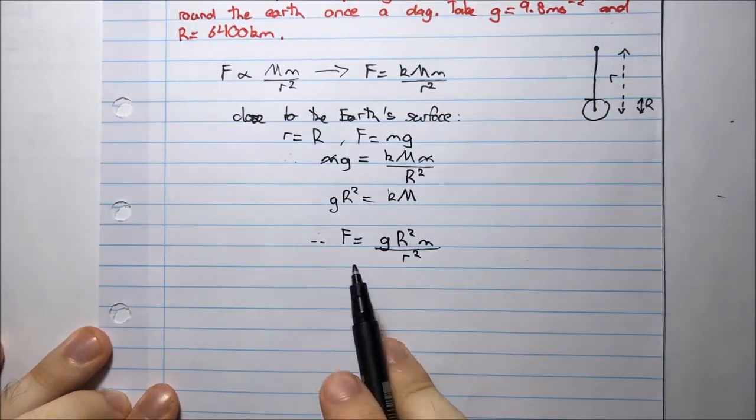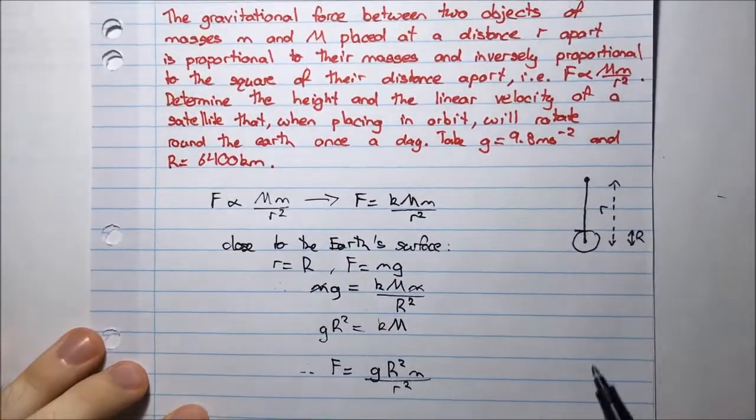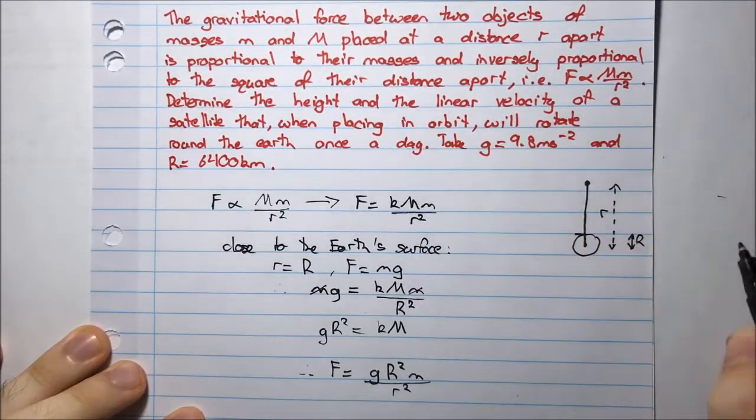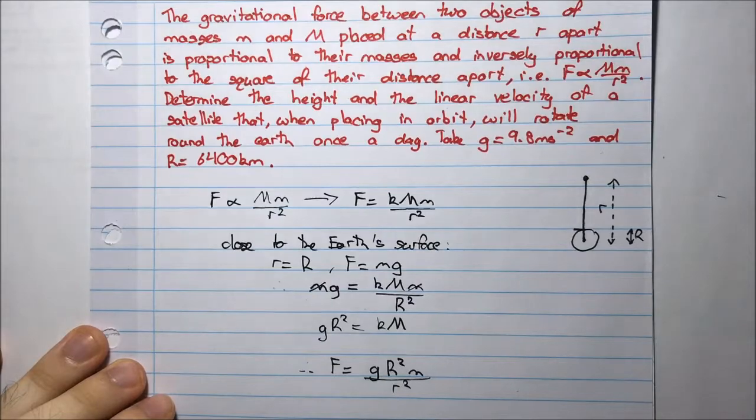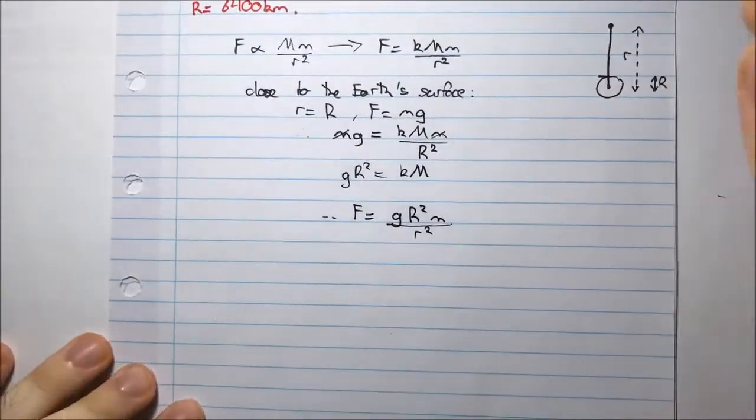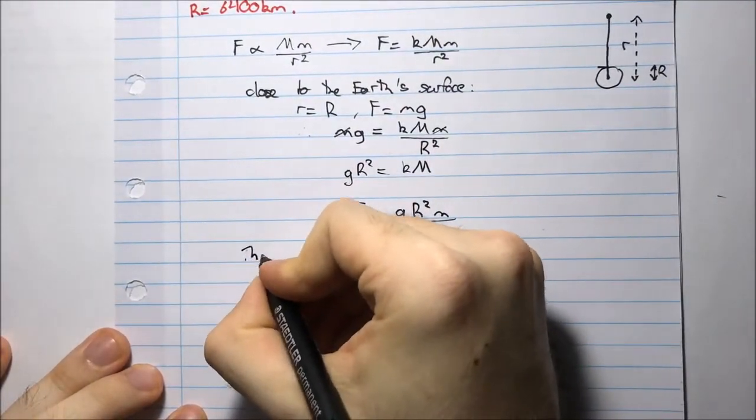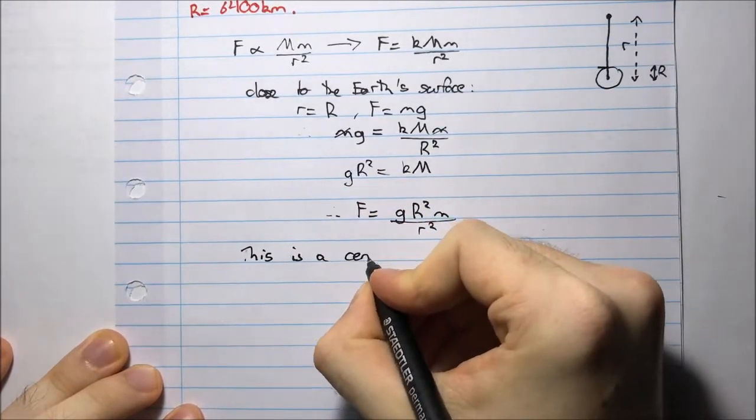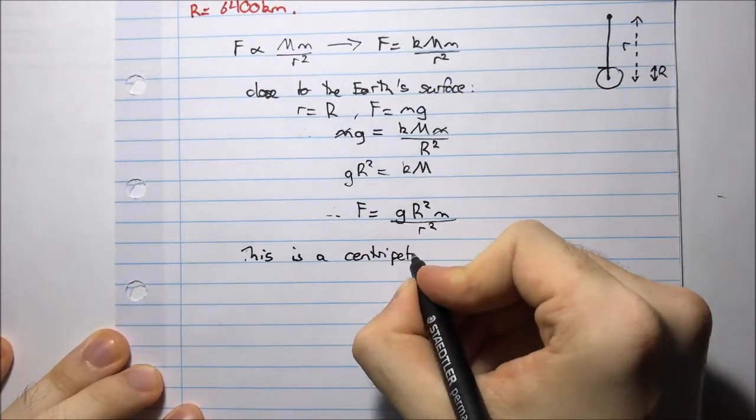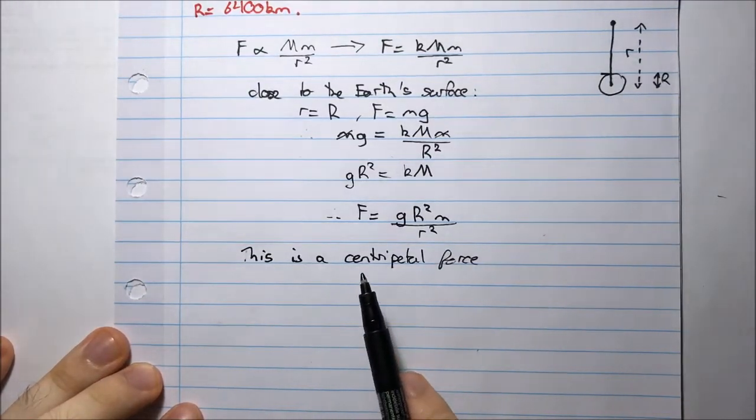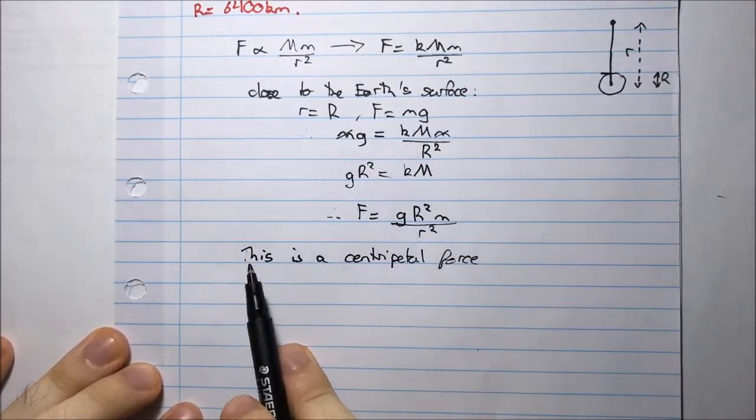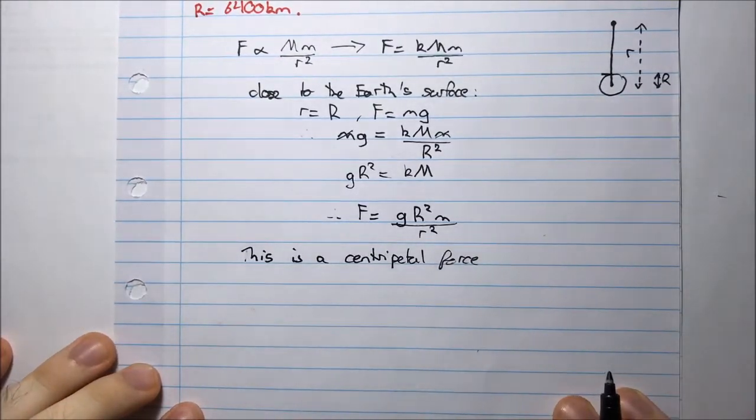But what is this force? This force is the force that's required to keep this satellite going in a circular motion, in a circular orbit around the earth. Now we know that a force which keeps something going in a circular motion is called a centripetal force. The physical force is the force of gravity, but the resultant force is a centripetal force. And that's the centripetal force which keeps the satellite in orbit.